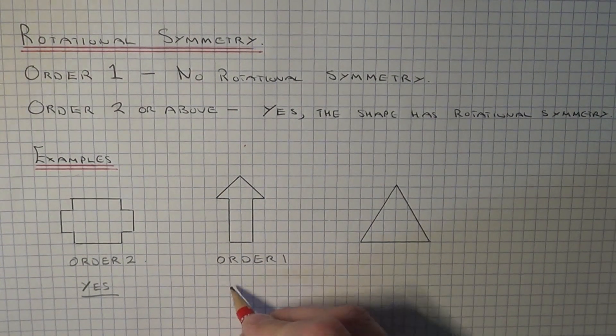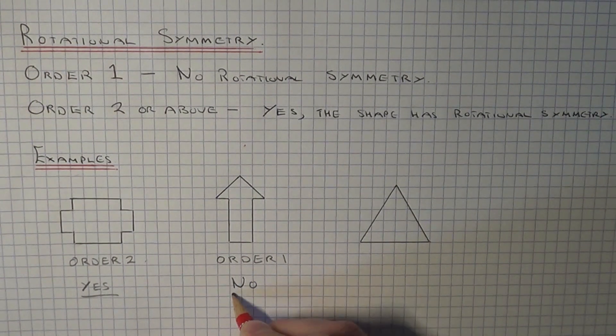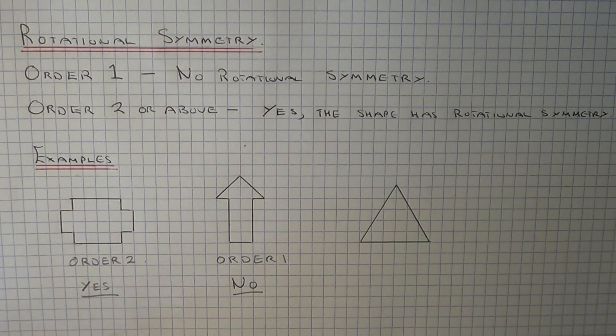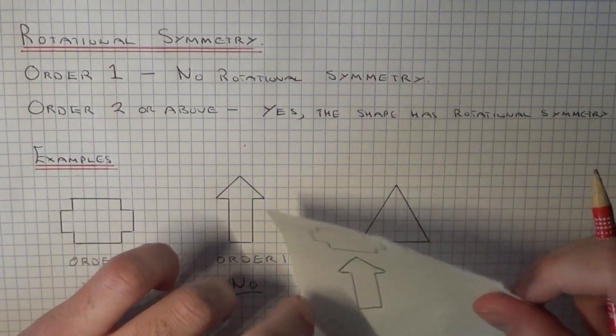So if the order is one, then the shape doesn't have rotational symmetry. So let's have a look at our last shape.